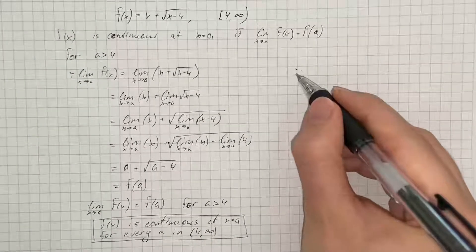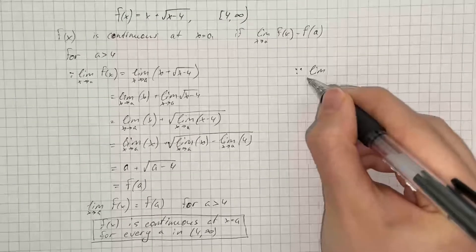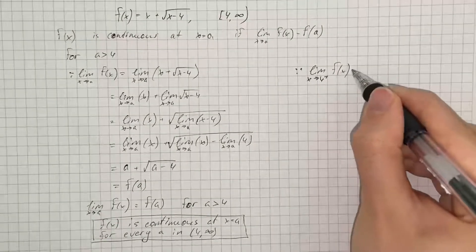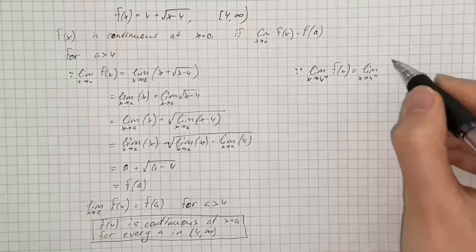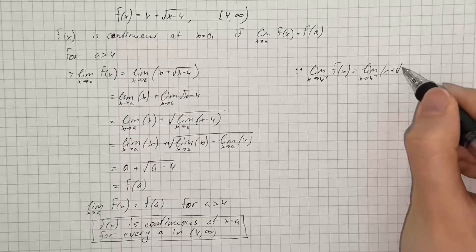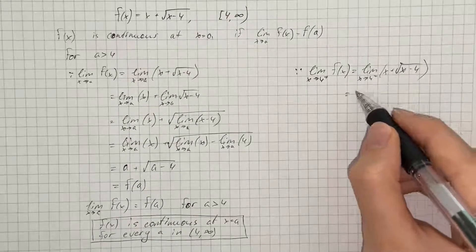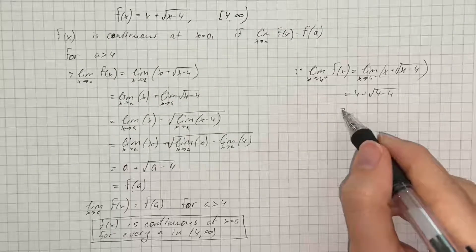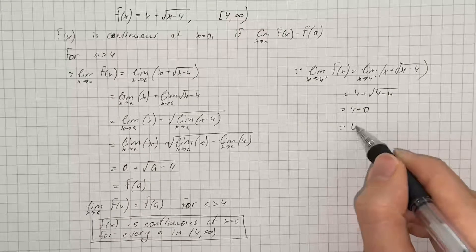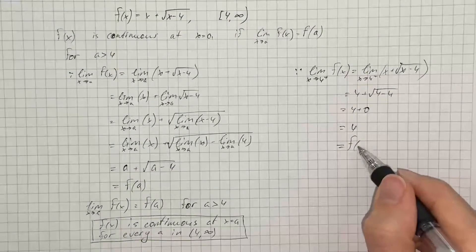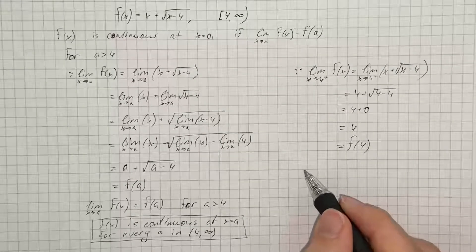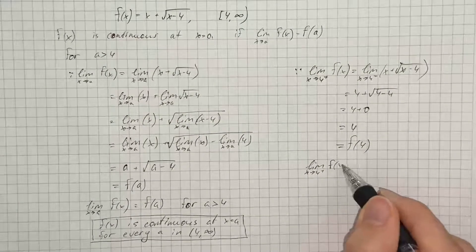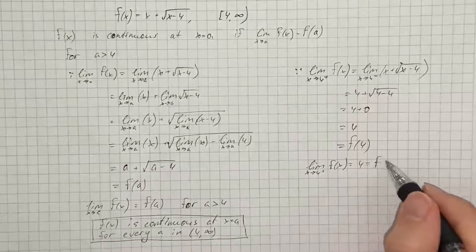Now we find the right-hand limit: the limit as x approaches 4 from the right of f(x). That equals the limit as x approaches 4+ of x plus the square root of x minus 4. Substituting x = 4, we get 4 plus the square root of 4 minus 4, which equals 4 plus 0, which equals 4. So that equals the function evaluated at 4, meaning the limit as x approaches 4+ of f(x) equals 4 equals f(4).